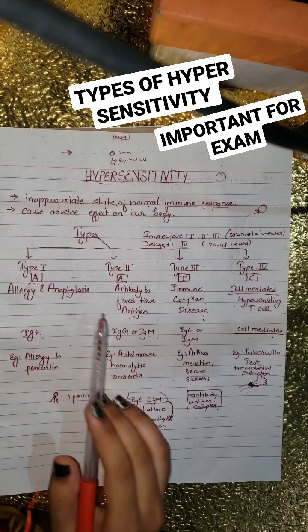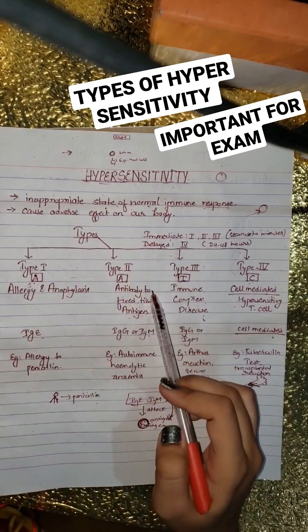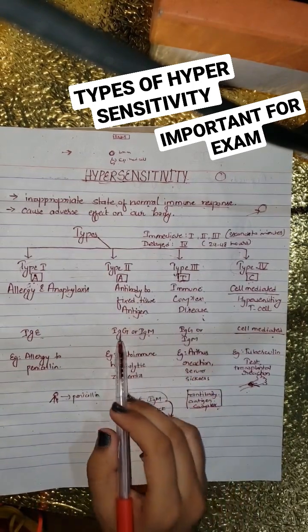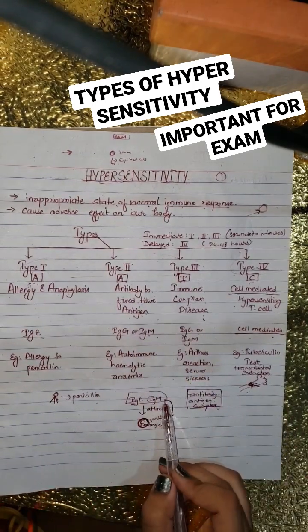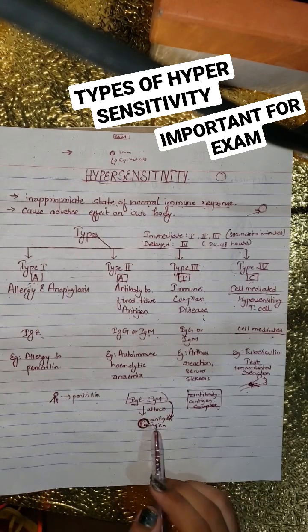Type 1 is associated with any kind of allergic reaction our body shows to certain things. Type 2 involves IgG and IgM antibodies which attack the antigens on cell surfaces, then damage the cell.